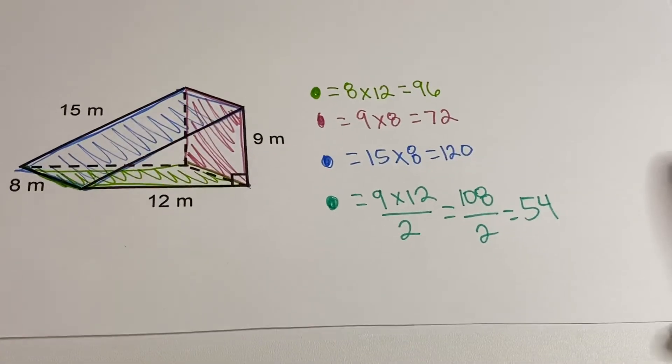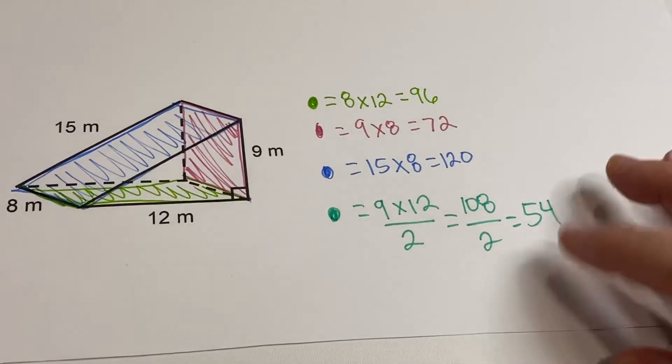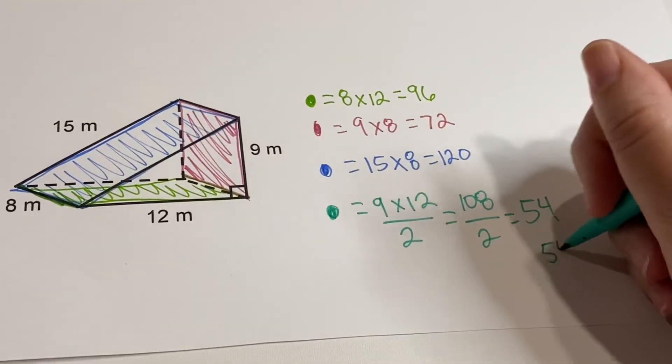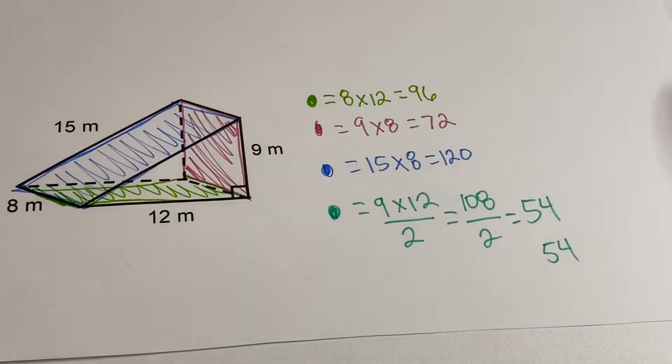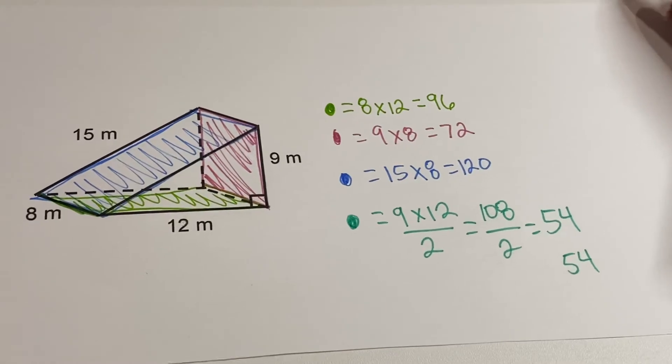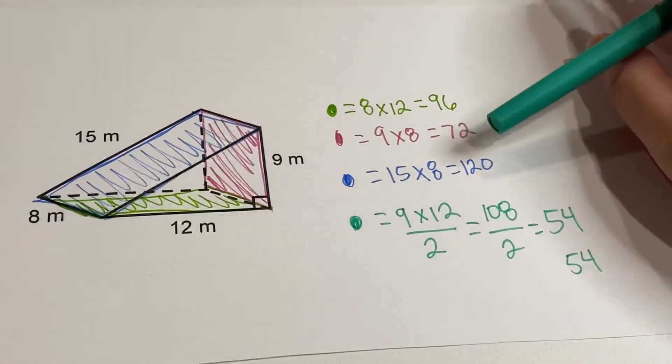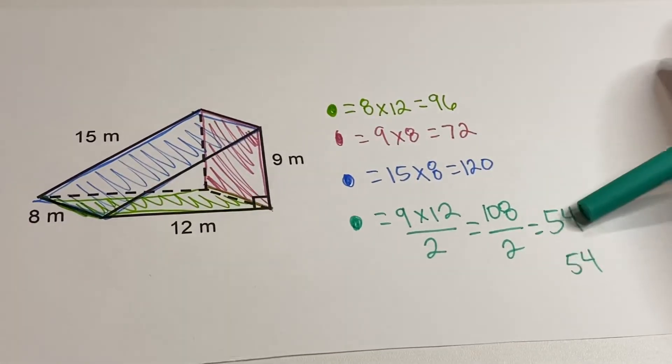So then it's just a matter of adding this all together. And we have two 54s, right, because we have two triangles. So we're just going to add 96 plus 72 plus 120 plus 54 plus 54.